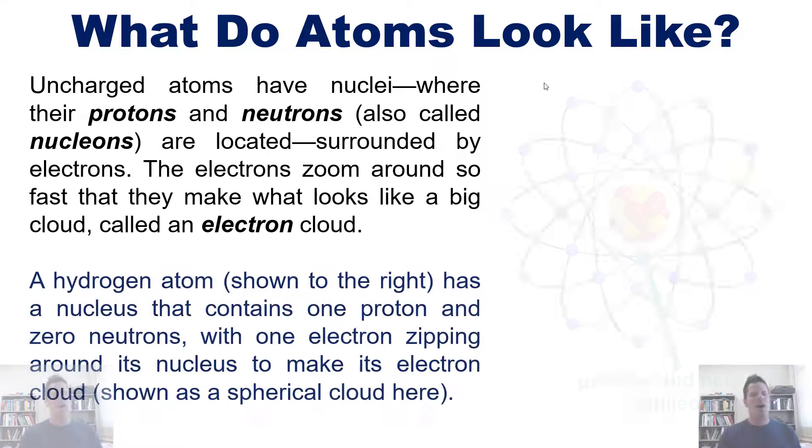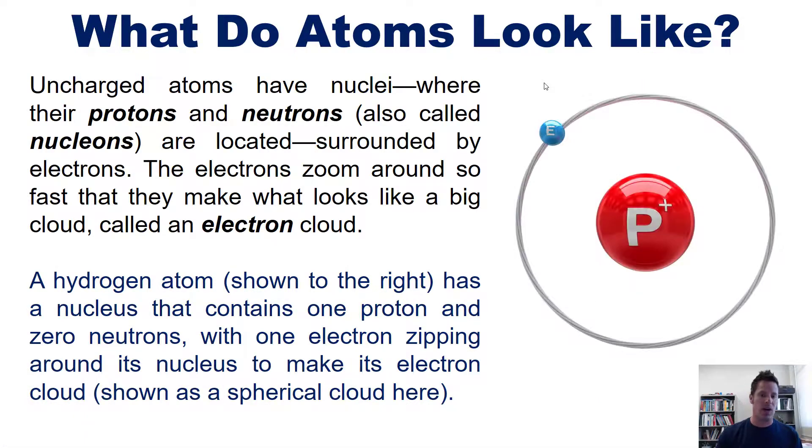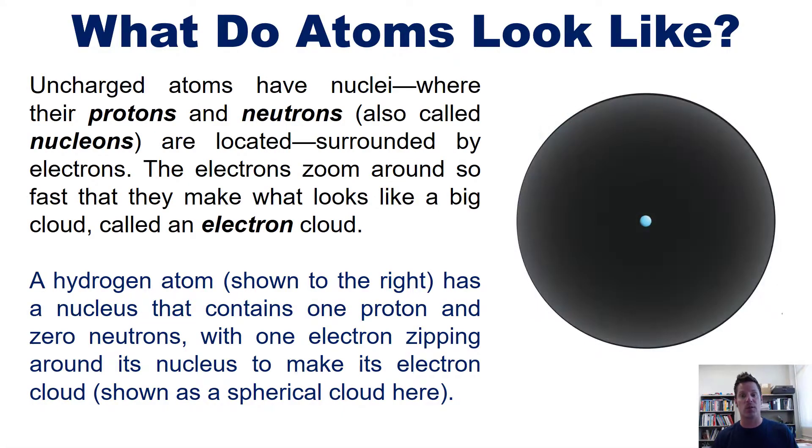A hydrogen atom, which is shown right here, has a nucleus represented by the sphere in the middle that has just one proton and zero neutrons. It has only one electron zipping around its nucleus to make its electron cloud, shown as a dark gray spherical cloud right here.